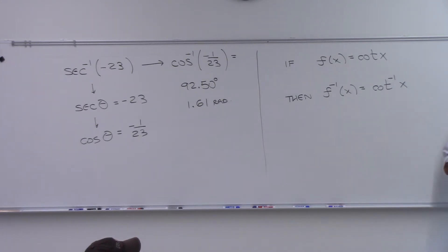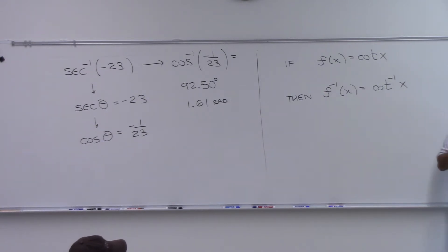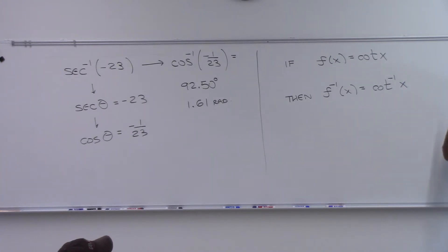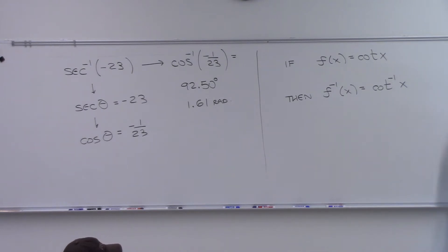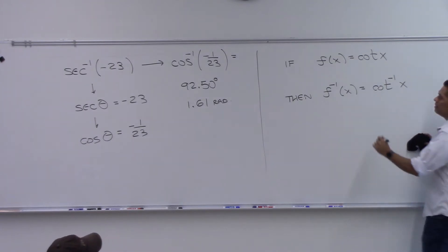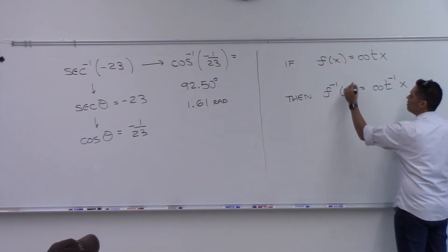Is it between the same two values? You have to be careful, because with tangent, tangent is between negative π/2 and π/2 when you graph it. But cotangent is moved over — it's flipped but it's moved over. So our domain restriction here is going to be different.